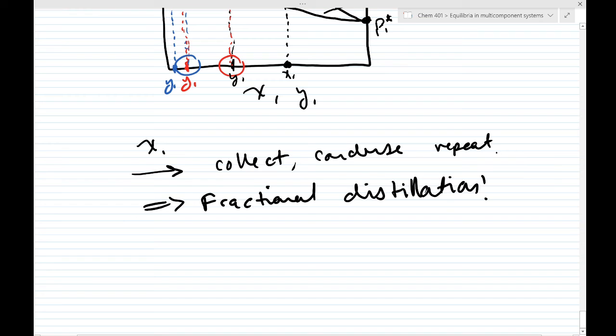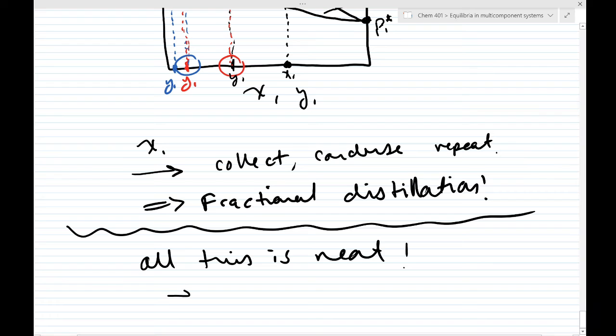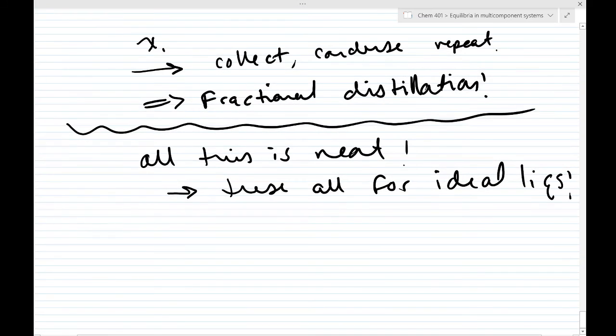This is all of this that we've talked about is neat, right? Neat and all. But I want to point out an important fact. These are all for ideal liquids. And there are many requirements for an ideal mixture. But one of the most often violated is the fact that delta V mix is equal to zero. This is often violated.